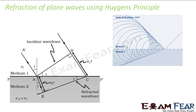Refraction comes into picture when there are two different media, and whenever there are two different media, the velocity of the wave changes. That means the speed of the wave in this medium would be v1 and the speed of the wave in this medium would be v2. So how does that affect things?